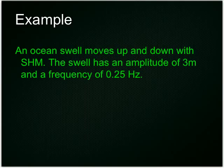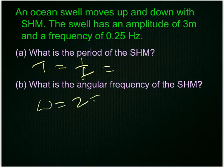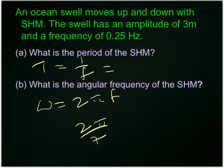So an ocean swell moves up and down with SHM. The swell has an amplitude of 3 meters, a frequency of 0.25 hertz. What is the period of the SHM? So period equals 1 over F, you can find it, just like that. What is the angular frequency of the SHM? So you could either use omega equals 2 pi F, or 2 pi over T.